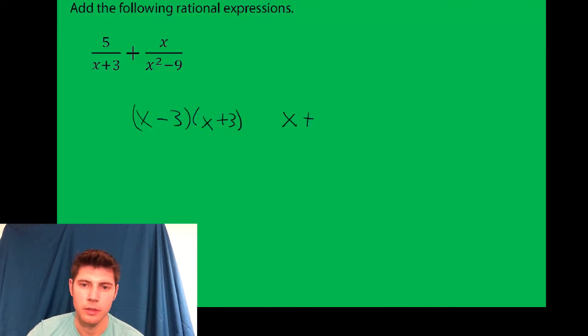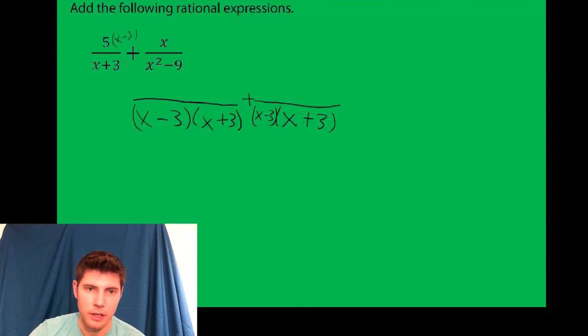So we're going to do both of them by x minus 3, x plus 3. What did we have to multiply this left side by to get x minus 3, x plus 3 on the bottom? What was x minus 3? So we're going to do x minus 3 to the top, x minus 3 to the bottom. And that on the top gives us 5x minus 15, and for the bottom we get what we wanted.